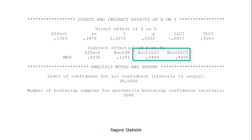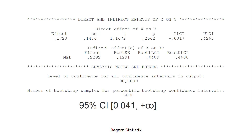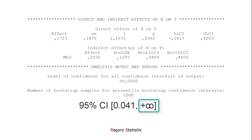This confidence interval is a two-tailed confidence interval for 90%. But we can use this to construct a one-tailed confidence interval. If our expectation is that we have a positive indirect effect, then we take the lower limit of the 90% confidence interval, and the upper limit would be infinity. So this would be a 95% one-tailed confidence interval.